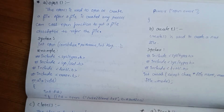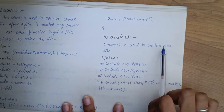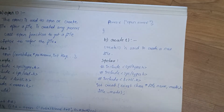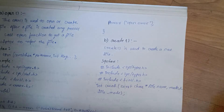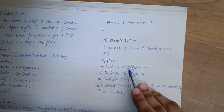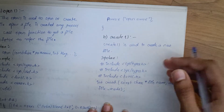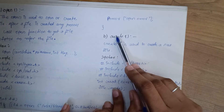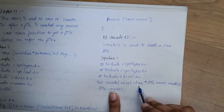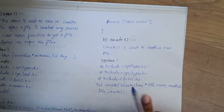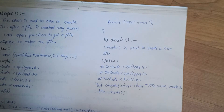Next is the create function. Create is used to create a new file. The syntax uses hash include sys/types.h, and the function signature is: int creat(const char *filename, int mode).